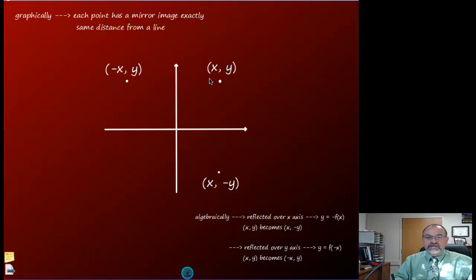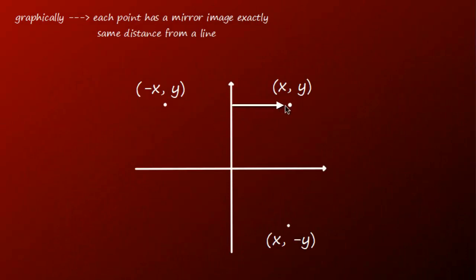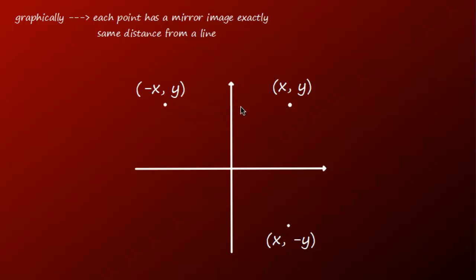If we take the point (x, y) and reflect it over the y-axis, the distance from the y-axis to the point is the same on both sides — like a mirror. The height doesn't change because the y value stays the same; only the horizontal distance changes direction. When we reflect over the x-axis, the distance from the x-axis going up equals the distance going down, so the x values stay the same but the y values are opposites.